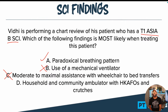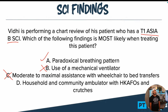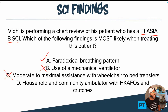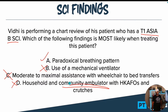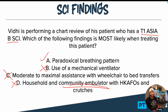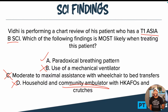D says household and community ambulator with HKFOs — hip, knee, ankle, foot orthoses — and crutches. I don't like this one either, because it's highly unlikely that a patient with a T1 ASIA B is going to be navigating the community with HKFOs. It's just not an efficient, effective means of mobility for that patient. They just don't have the trunk control for that, and obviously they don't have any lower extremity strength either. So that leaves us with paradoxical breathing pattern.